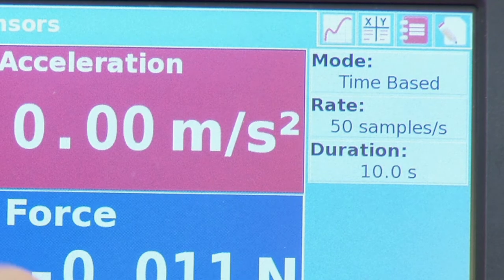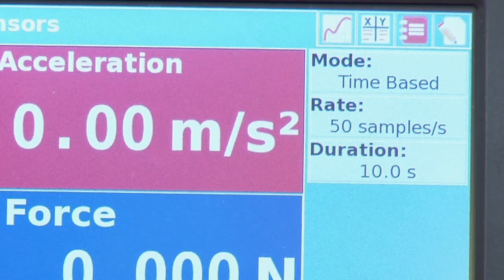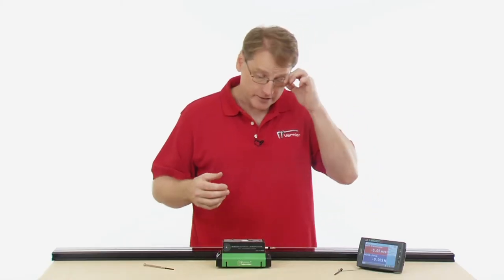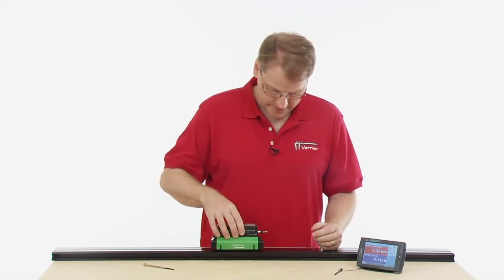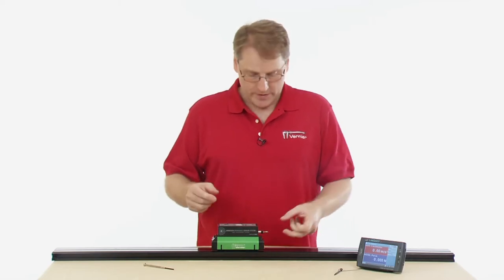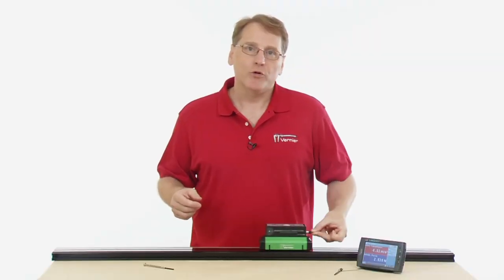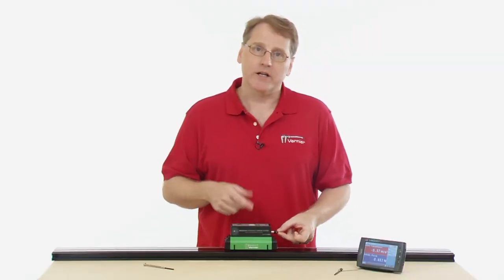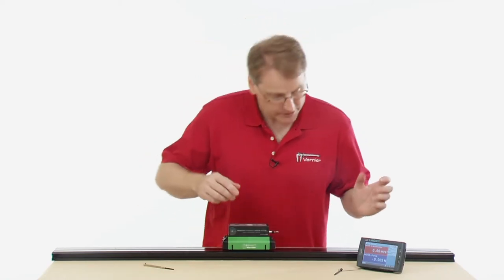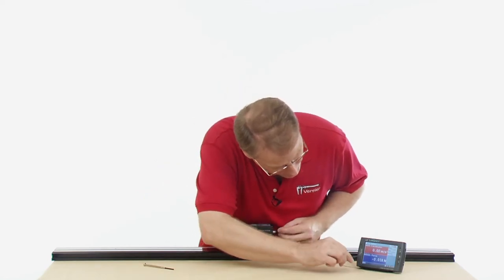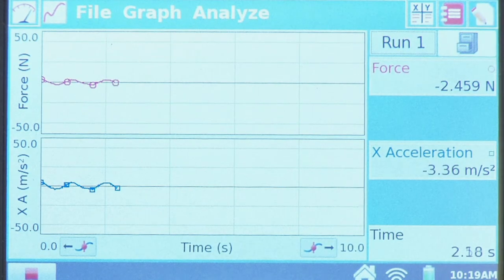Let's take a look at our default collection parameters here. It's defaulting to 50 samples per second, time-based graph, with the duration of 10 seconds, which would be fine for what we're going to do here. I'm going to put it on the track here. I am going to be moving this back and forth on the track and simultaneously measuring both the force and the acceleration in the x direction. I'm going to hit collect, and then I will just move it back and forth.